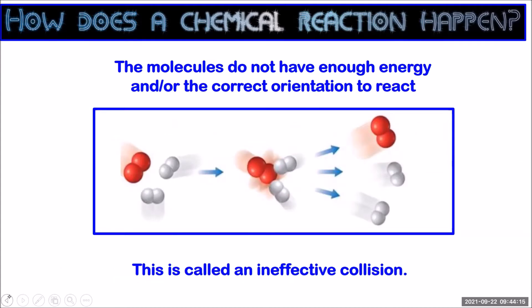Two criteria need to be satisfied before a collision results in a reaction. First of all, the molecules have to meet with the correct atoms together to react — this is called having orientation requirements. And secondly, the molecules have to have enough energy to break their existing bonds — this is what we call energy requirements. So in an ineffective collision where no reaction has occurred, one or both of those conditions have not been satisfied.